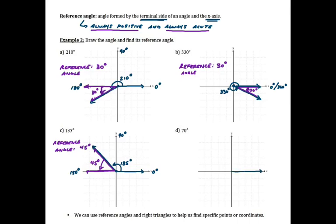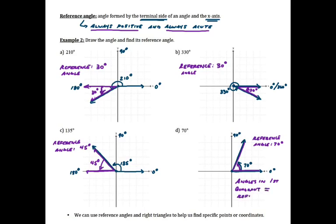For part D, I want to draw a 70 degree angle and find its reference angle. Both my initial and terminal side are in quadrant 1, so the reference angle should be acute and positive. The reference angle is actually the same as the original angle. For any angle drawn in quadrant 1 — anything between 0 and 90 — the reference angle and the angle are exactly the same. If I drew a 20 degree angle, the reference angle would be 20; a 30 degree angle gives a reference angle of 30.